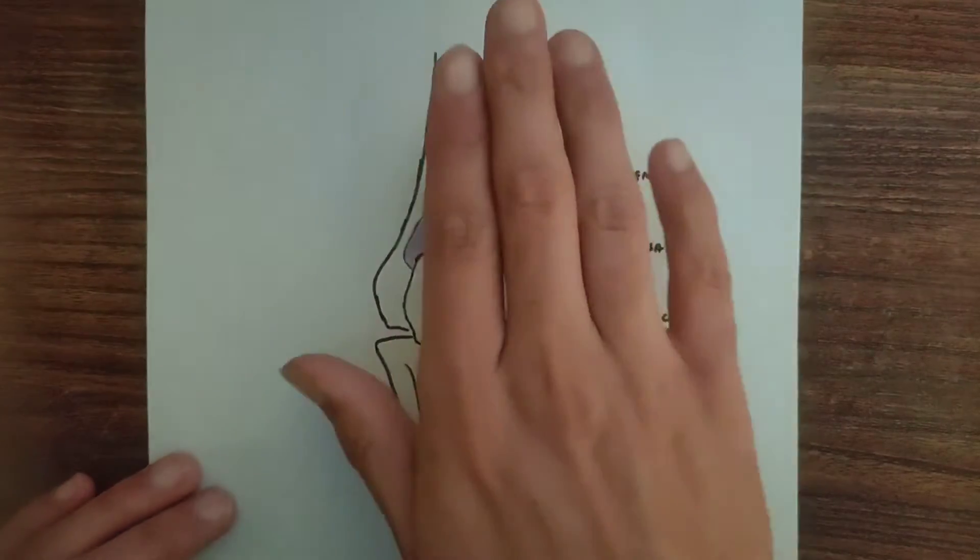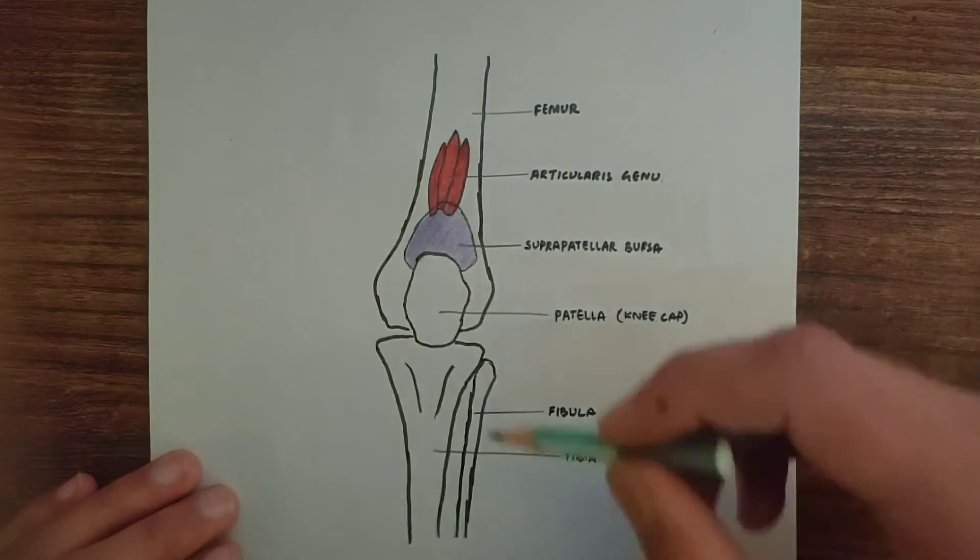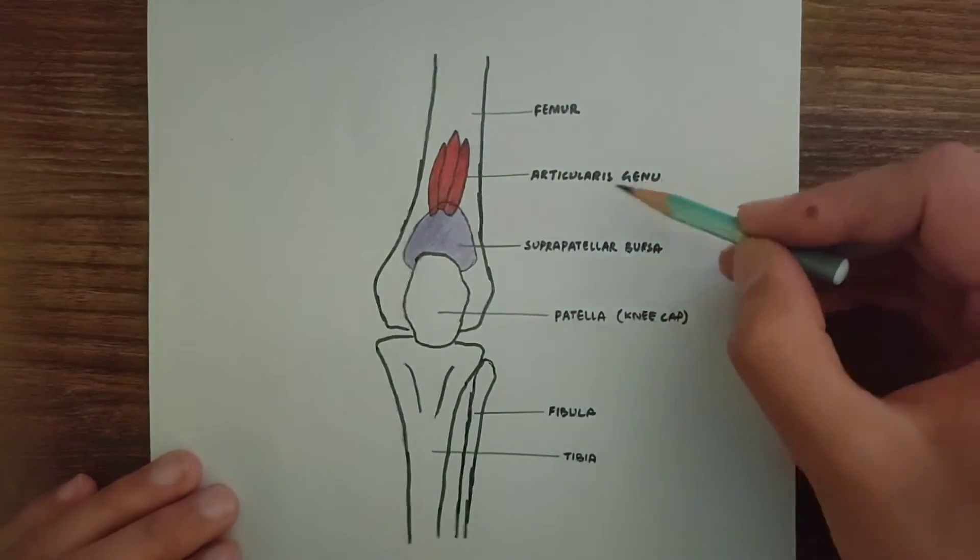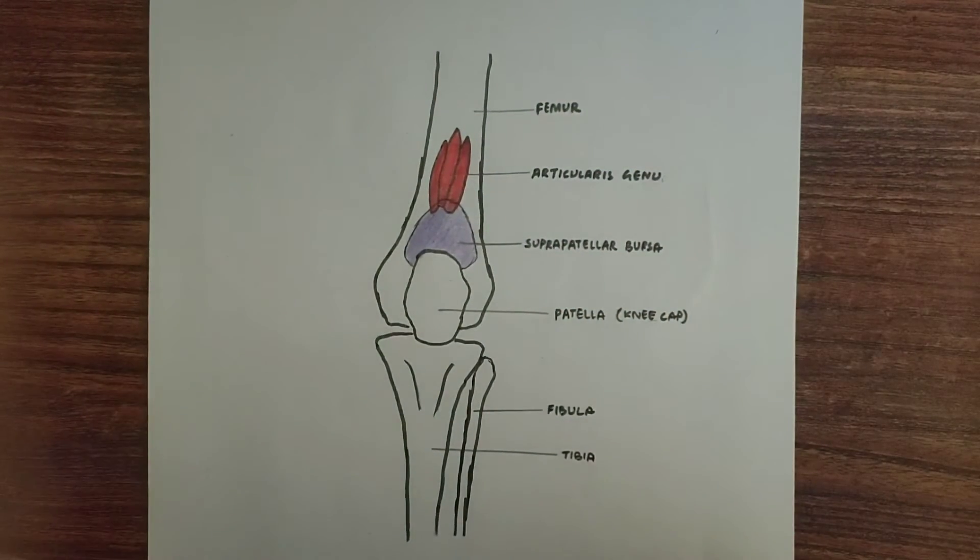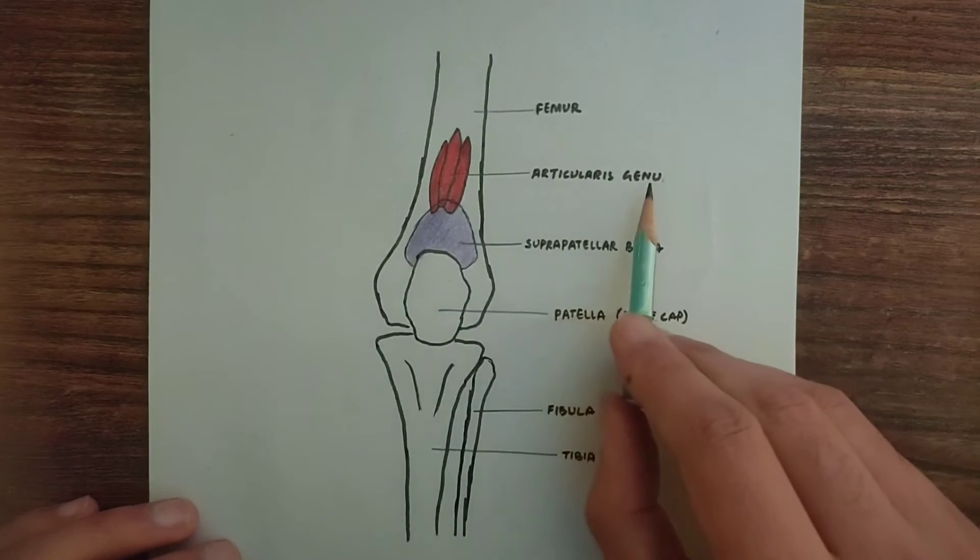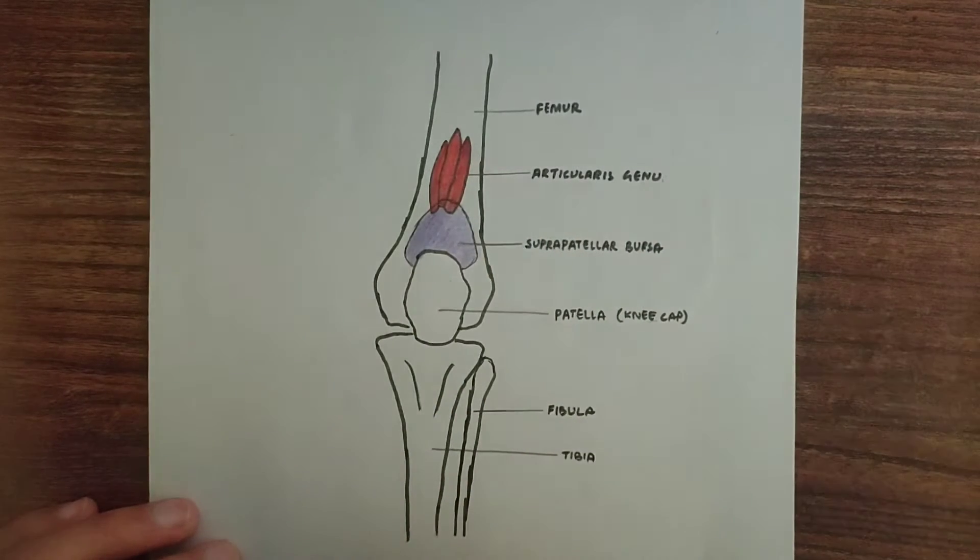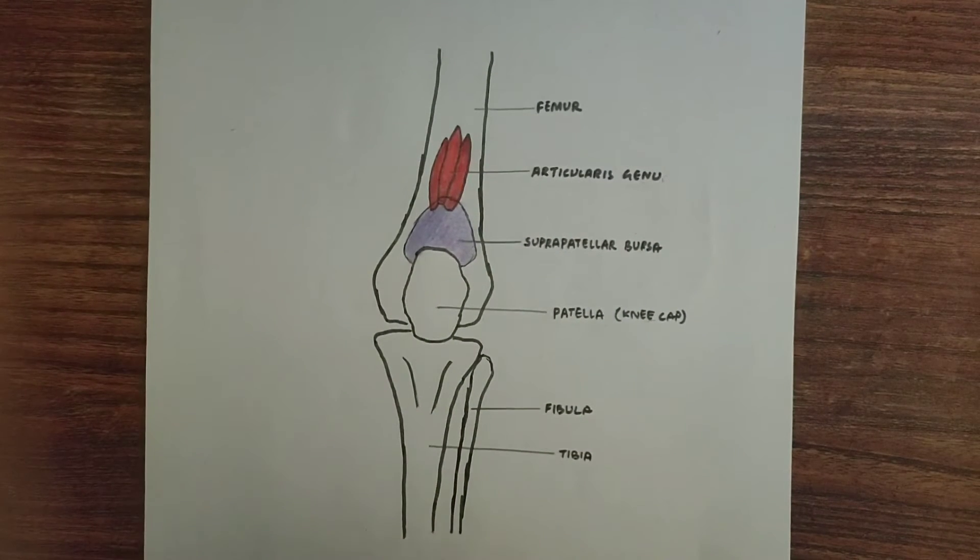This Articularis genu muscle lies deep to vastus intermedius muscle. So above Articularis genu muscle comes the vastus intermedius muscle, and sometimes it is assumed that Articularis genu muscle is a detached part of vastus intermedius.